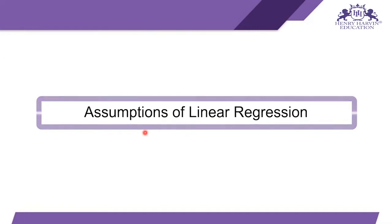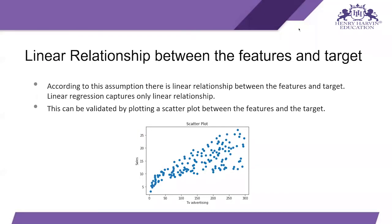Let's start. The first assumption is a linear relationship between the features and the target. The data we have must show a linear relationship between features and target. If you plot the features and the target in a scatter plot, you should see a linear graph — not something exponential or a tan graph. Linear regression captures only linear relationships.